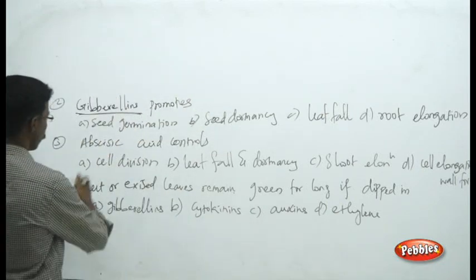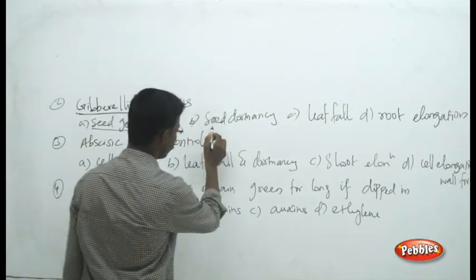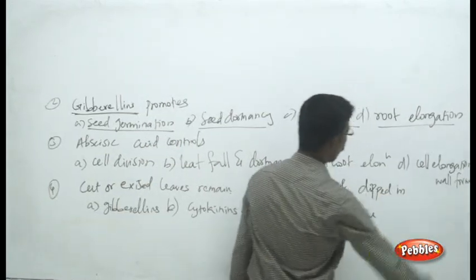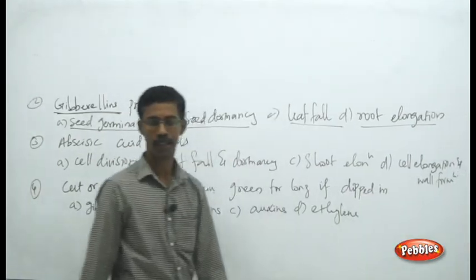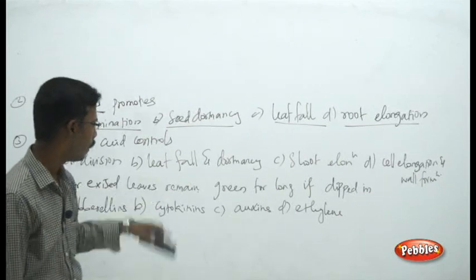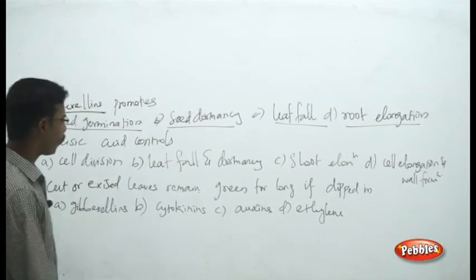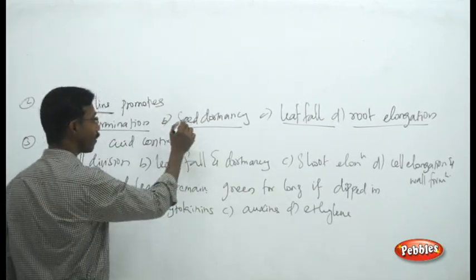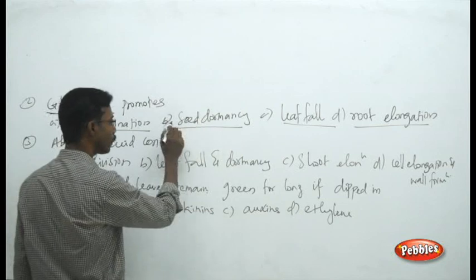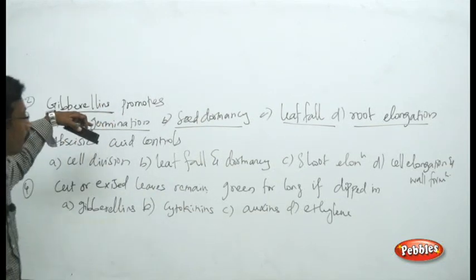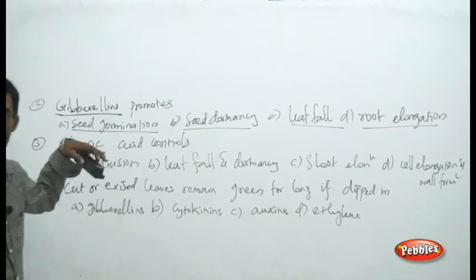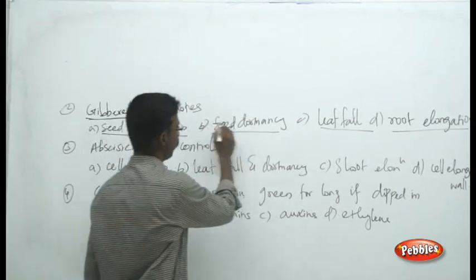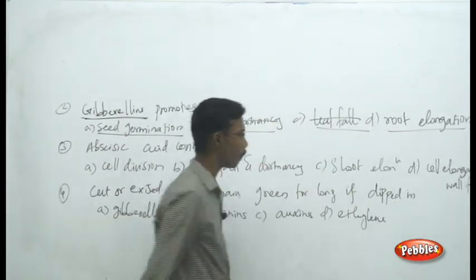Gibberellins promotes: the choices are seed germination, seed dormancy, leaf fall, and root elongation. Seed dormancy and leaf fall are negative connotations. Gibberellins belongs to growth-promoting hormones, so you can easily eliminate dormancy and leaf fall. The remaining choices are root elongation and seed germination.